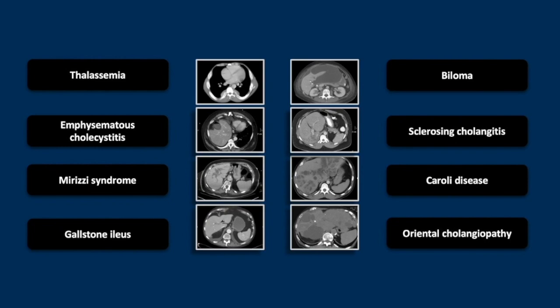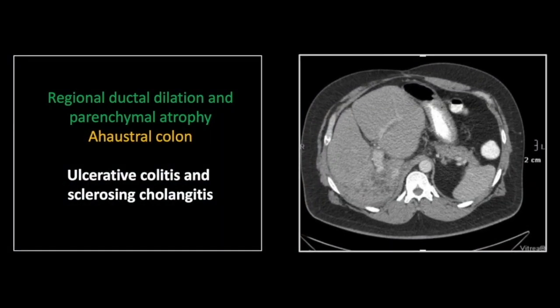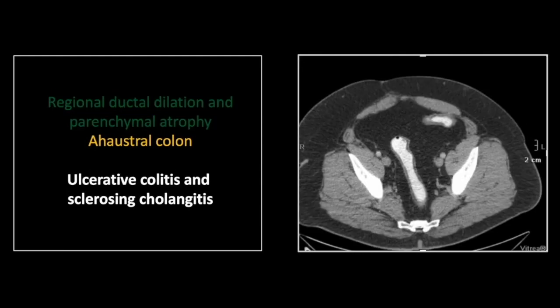Our next case is sclerosing cholangitis. There is significant dilation and approximation of the bile ducts here in the posterior right liver lobe, which demonstrates significant atrophy. In addition, there is a featureless colon with hypodense walls consistent with fatty infiltration and chronic inflammation — all adding up to ulcerative colitis with associated sclerosing cholangitis.